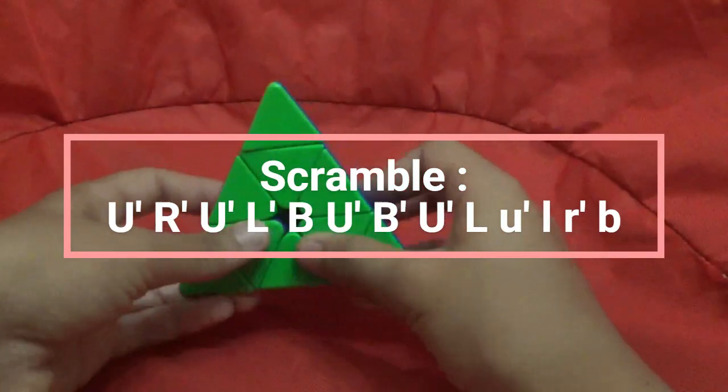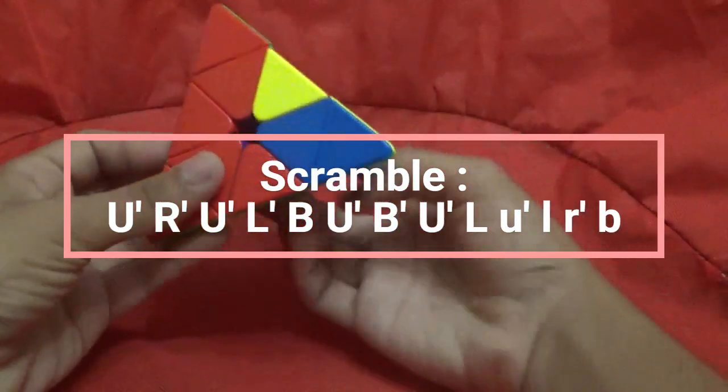That means the cube is going to be reliable as well. Corner twist? Not happening.